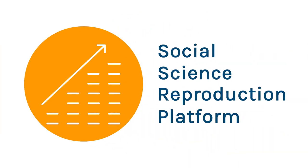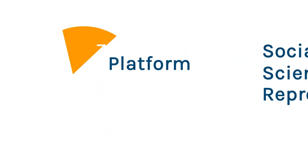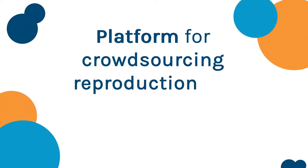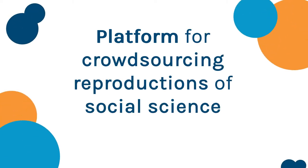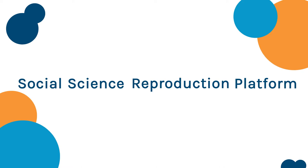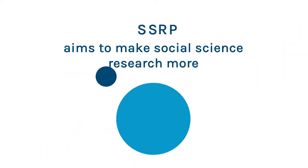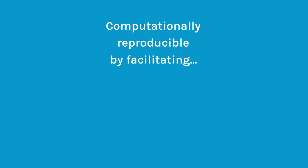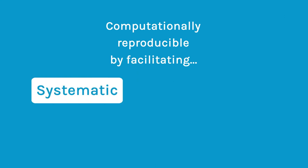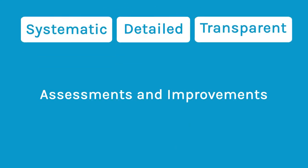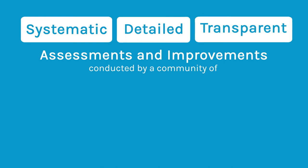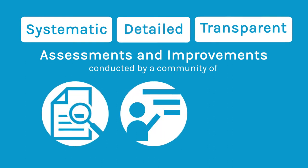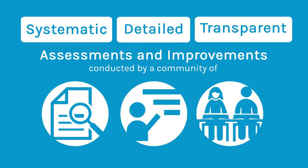Welcome to the Social Science Reproduction Platform, a platform for crowdsourcing reproductions of social science research. The SSRP aims to make social science more computationally reproducible by facilitating systematic, detailed, and transparent assessments and improvements conducted by a community of researchers, instructors, and students like you.